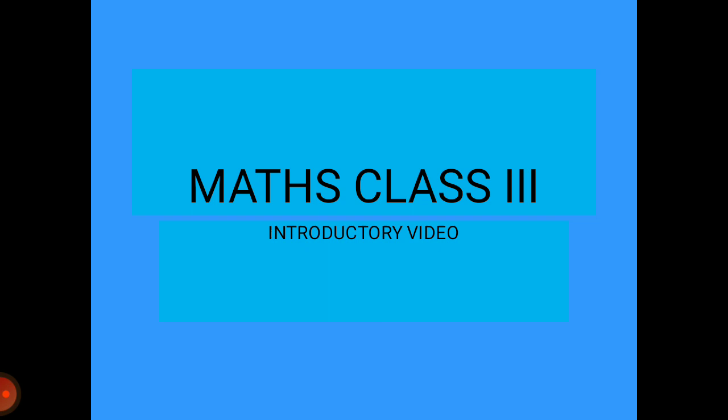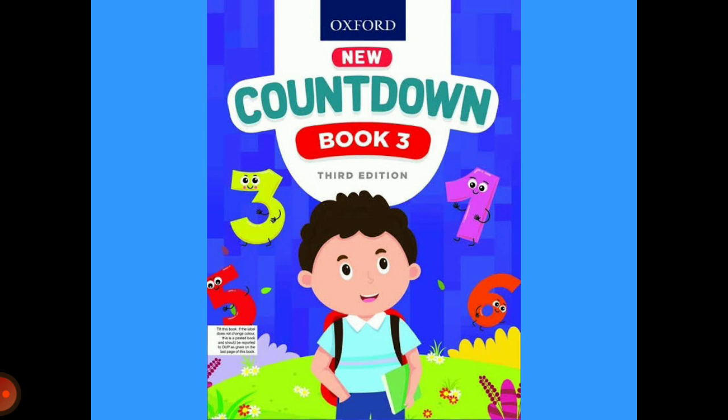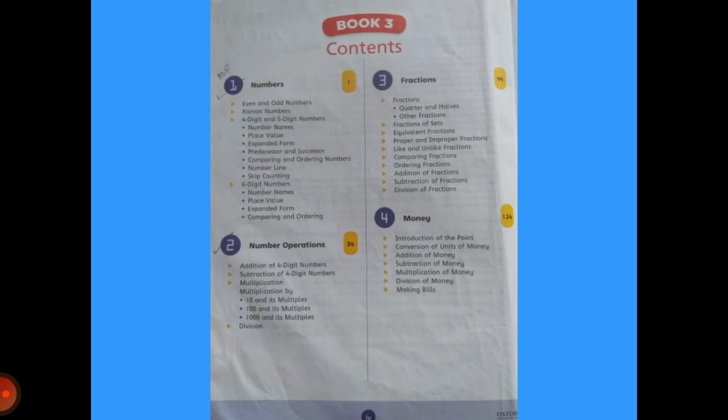So let's take a look at the book and its contents. This is your book: Countdown Book Number 3, Third Edition. The distributors and publishers are Oxford. Let's have a look at the contents.